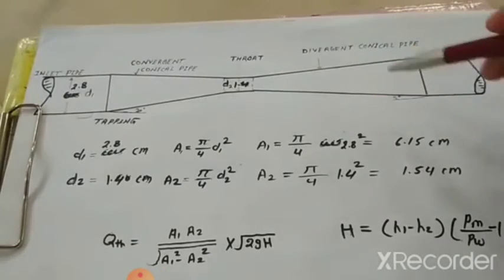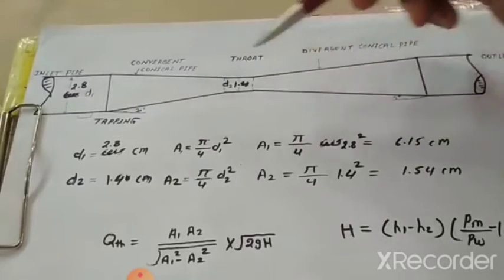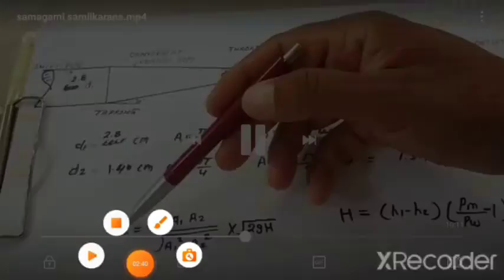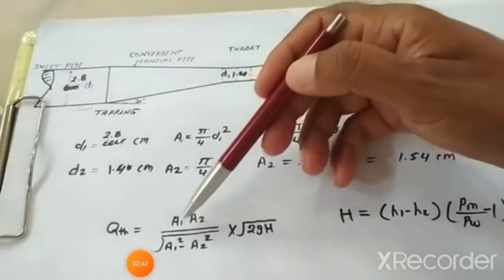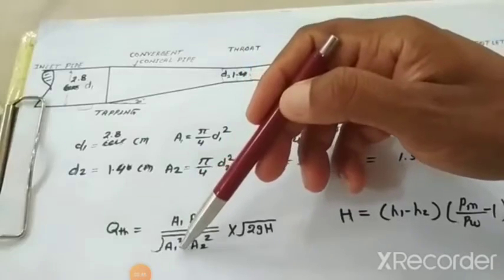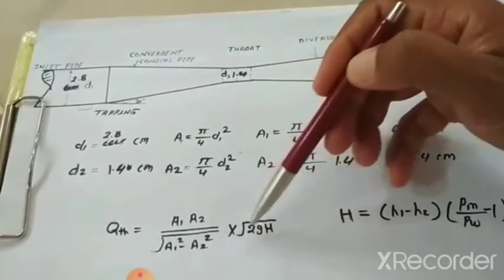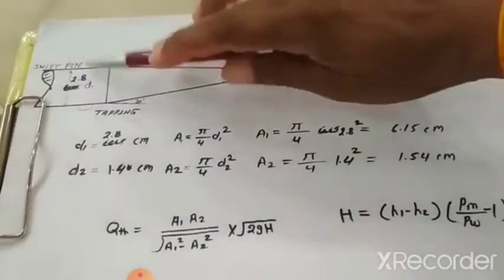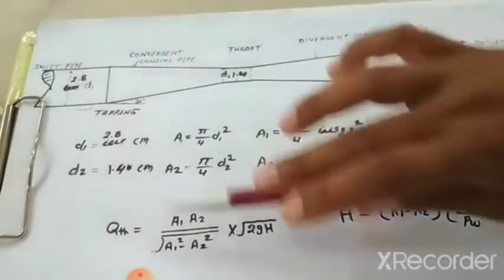So here a1 and a2 is the area of the inlet pipe and the throat, where a1 and a2 refer to the diameter of the inlet and throat.